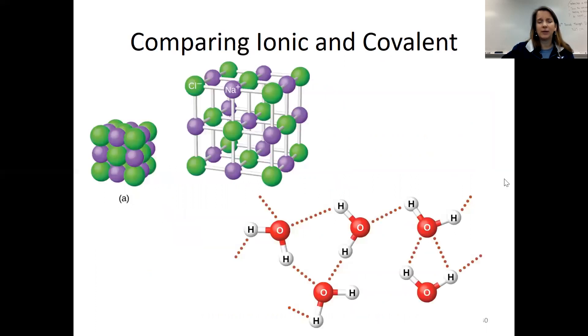So let's take a look and compare these. Up here, this purple and green picture is showing you an ionic solid. You can see that it's formed because of a positive metal ion and a negative non-metal ion.